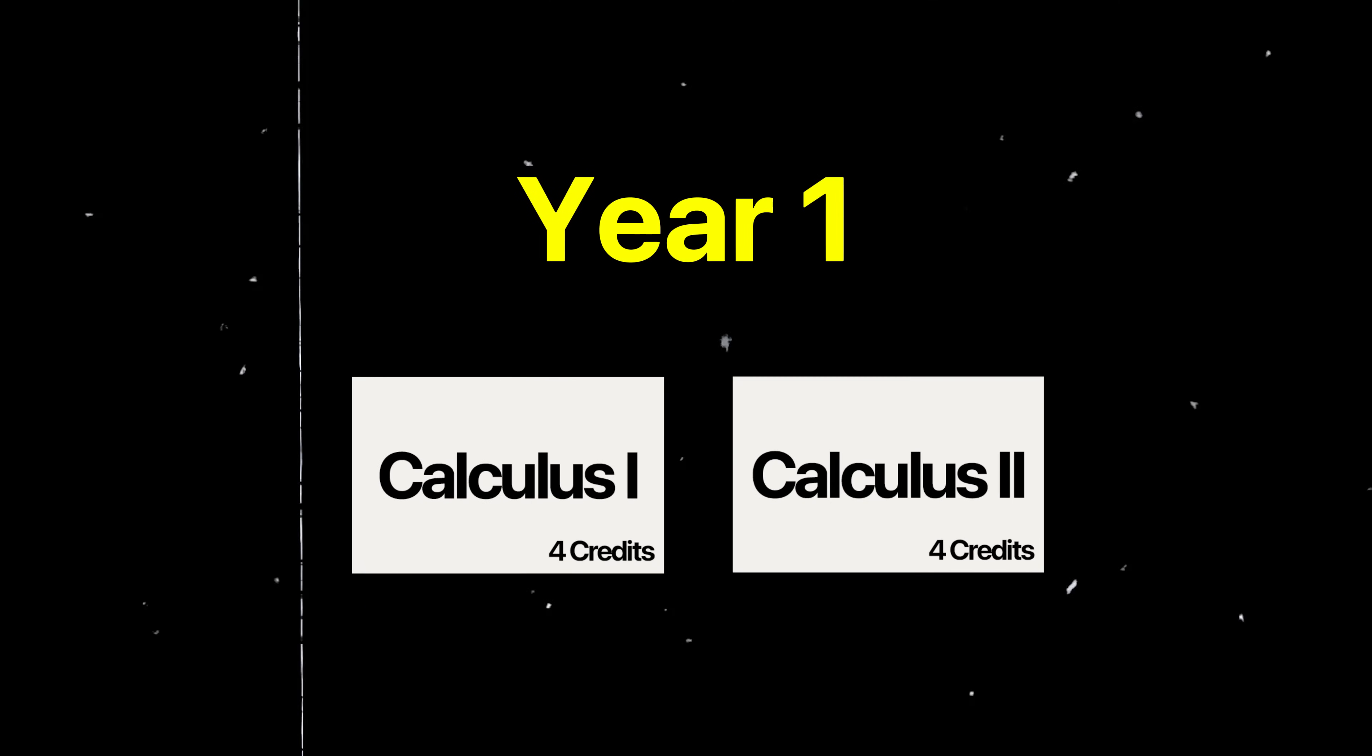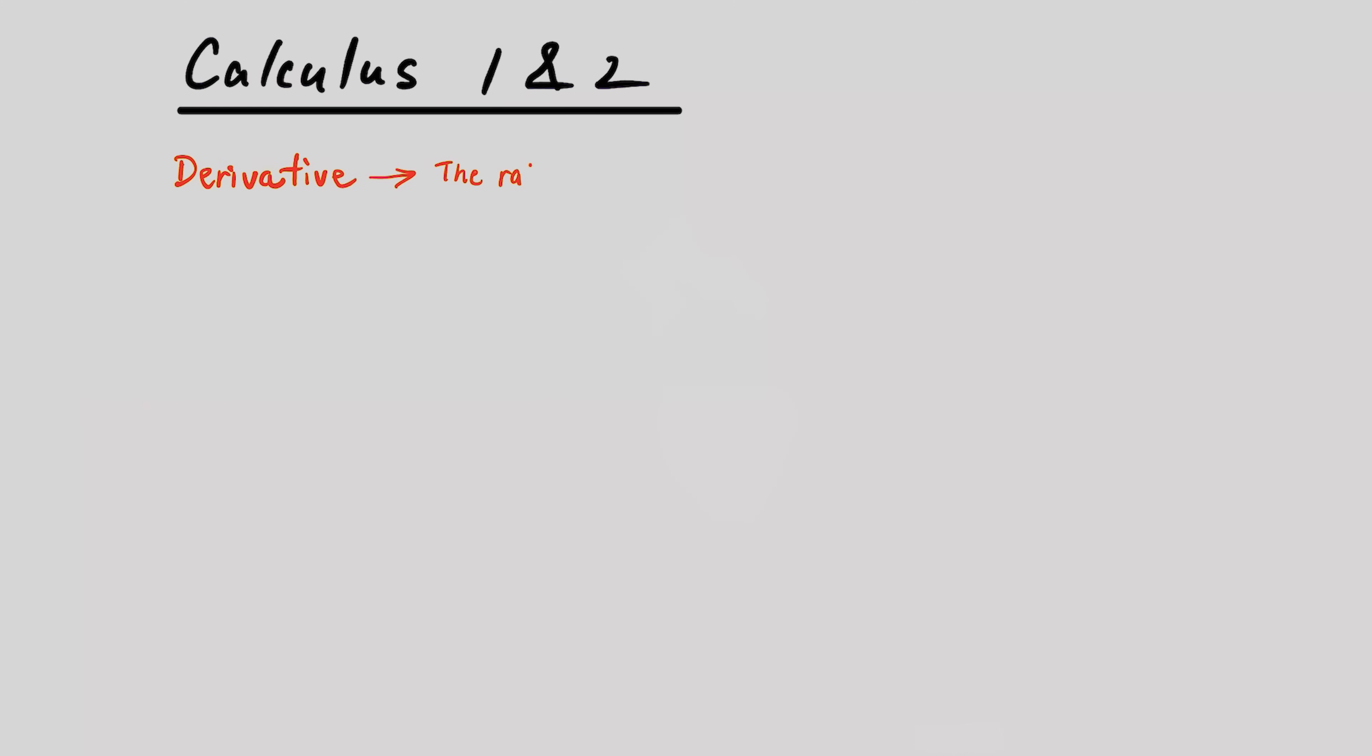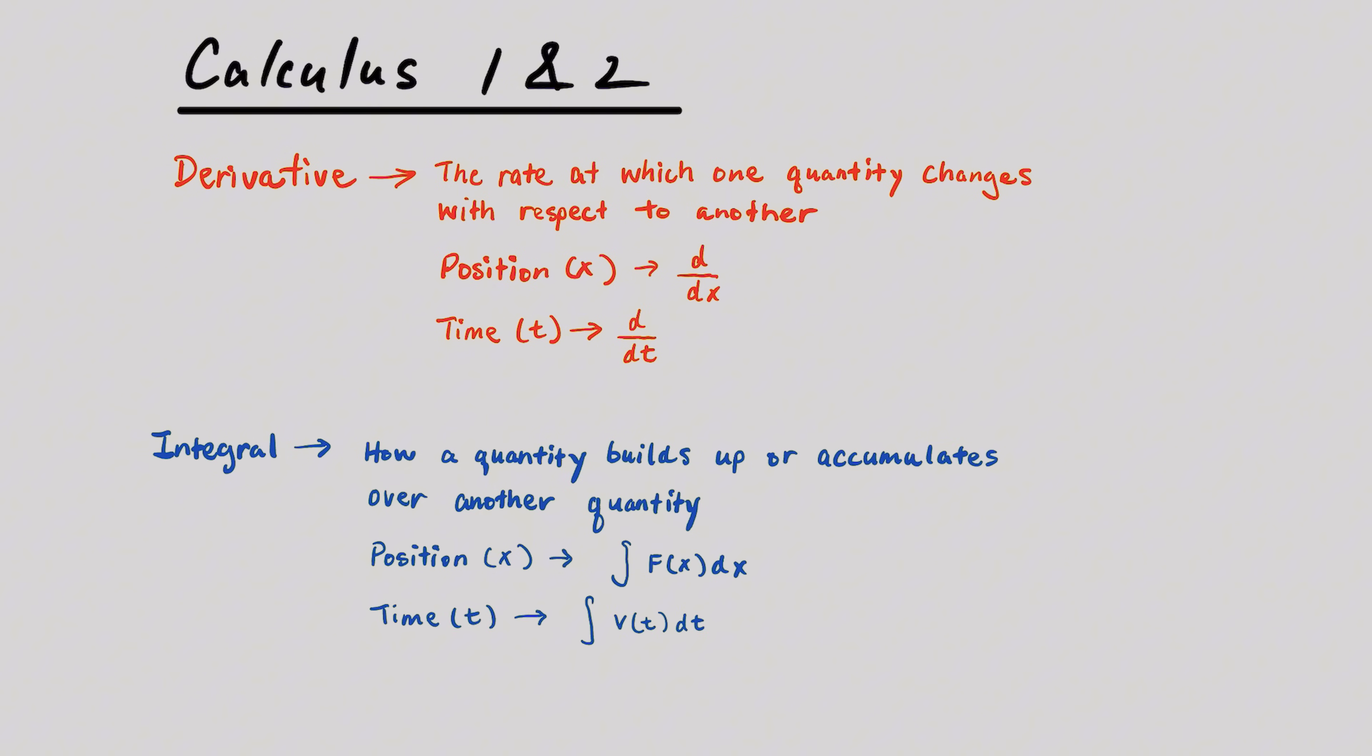As a freshman in university, you will take Calculus 1 and Calculus 2. In these classes, you'll learn how variables like velocity or temperature change over time along a path or across space. You'll learn how to take derivatives, which tell you the rate at which one quantity changes with respect to another - often time or position - and integrals, which describes how a quantity builds up or accumulates over time or distance. So for example, velocity is the derivative of position with respect to time and tells us how fast something moves.